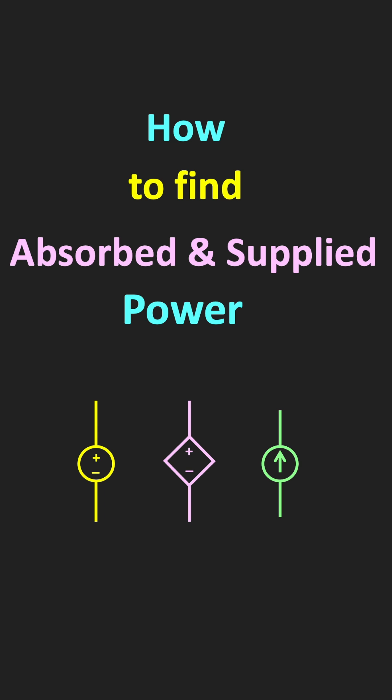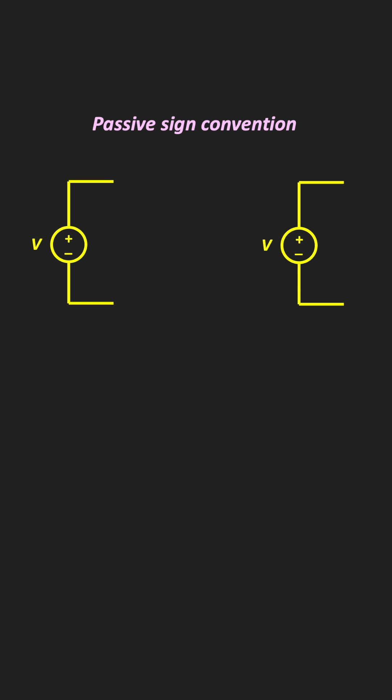In electrical circuits, how do we find out whether an element is absorbing power or delivering power? As per the passive sign convention, when the current is entering the positive terminal of the voltage, then the power is positive, and it means that the electrical element is absorbing the power.